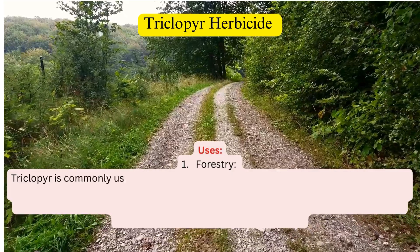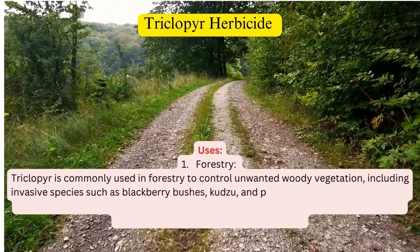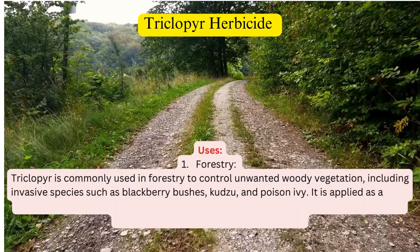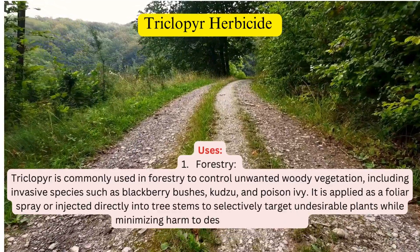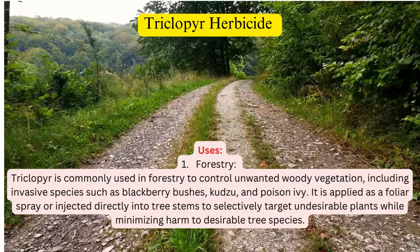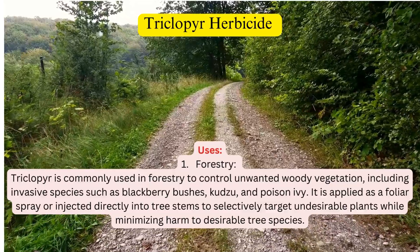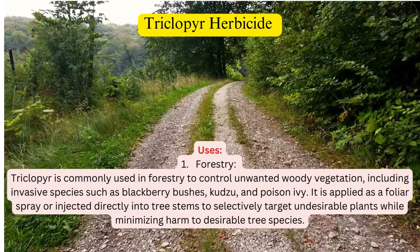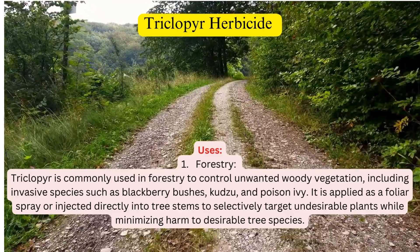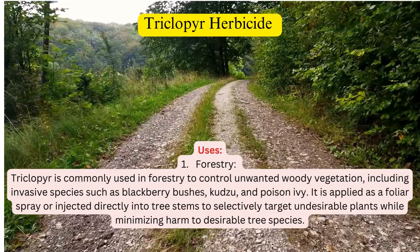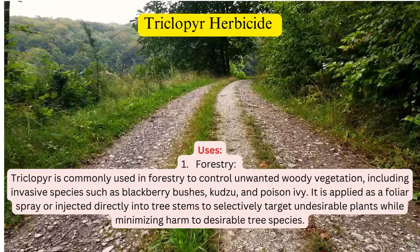Uses. 1. Forestry. Triclopyr is commonly used in forestry to control unwanted woody vegetation, including invasive species such as blackberry bushes, kudzu, and poison ivy. It is applied as a foliar spray or injected directly into tree stems to selectively target undesirable plants while minimizing harm to desirable tree species.